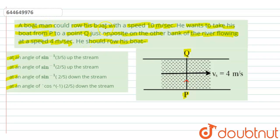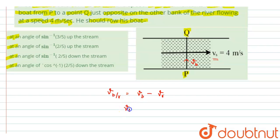The boatman has to row his boat from P to Q, so the actual velocity of the boat with respect to ground must be in the direction from P to Q. The speed of the stream or the river is shown by Vs. The velocity of the boat with respect to river can be written as velocity of boat with respect to ground minus the velocity of river with respect to ground. So the velocity of the boat equals velocity of boat with respect to river plus velocity of river.